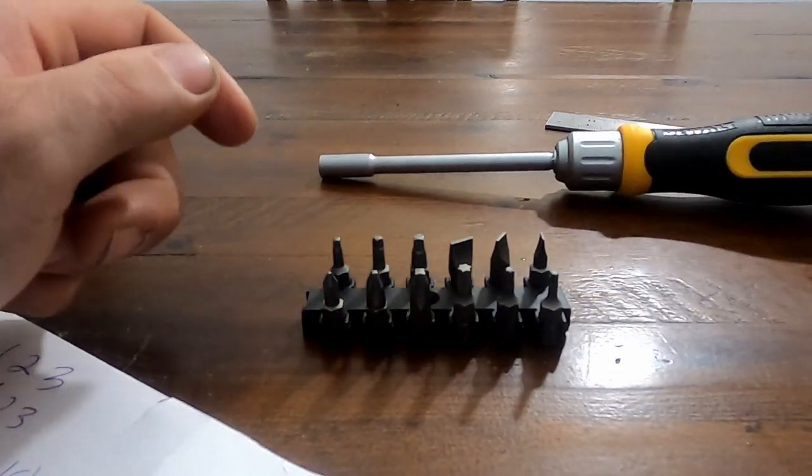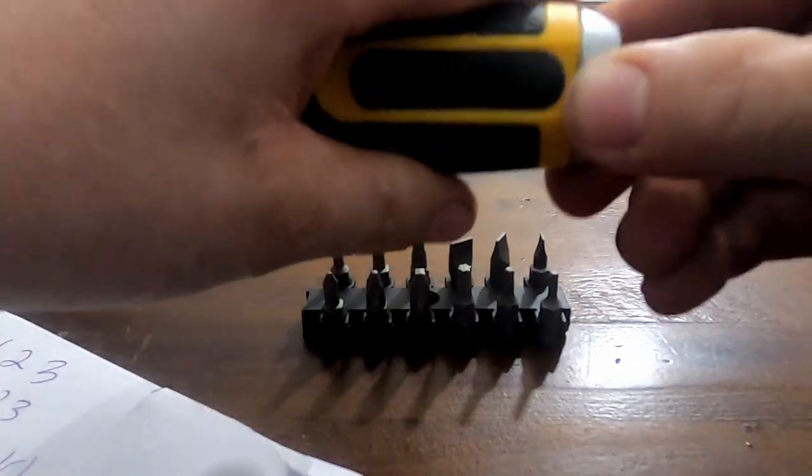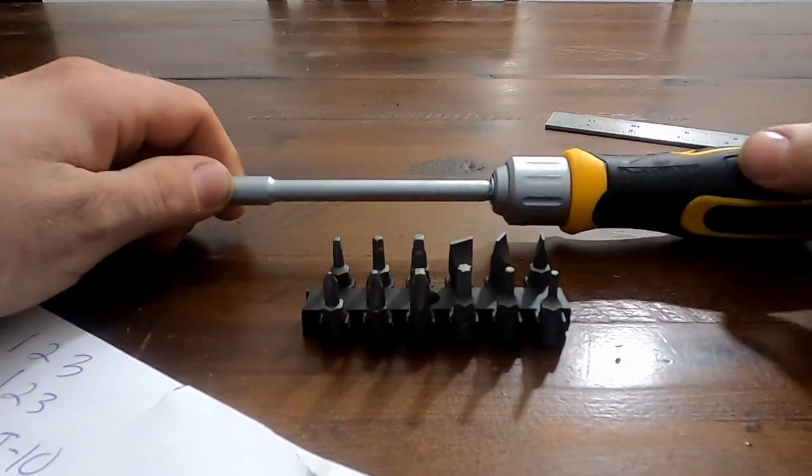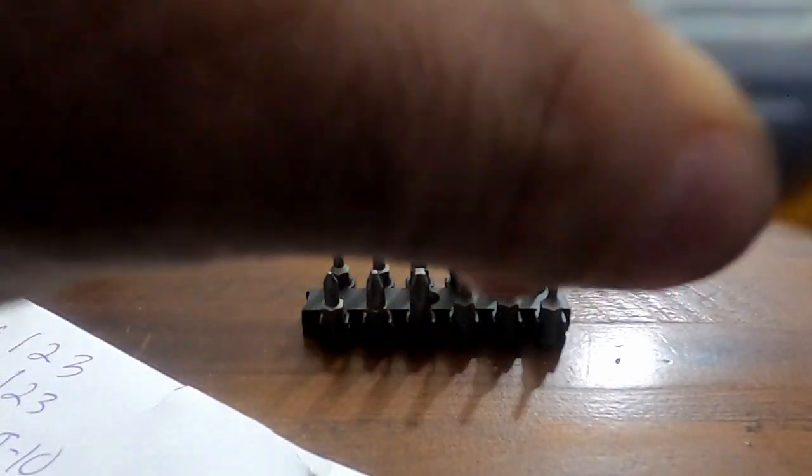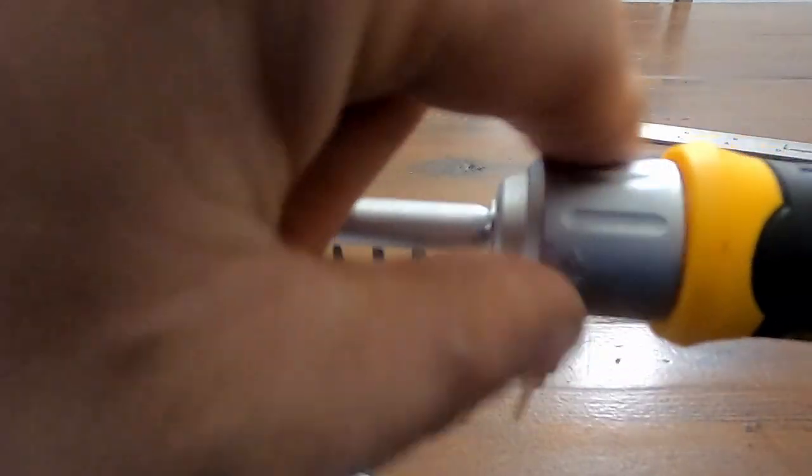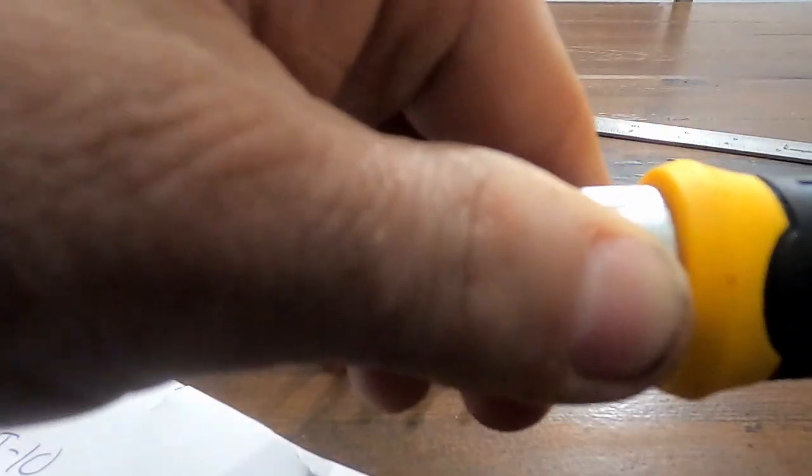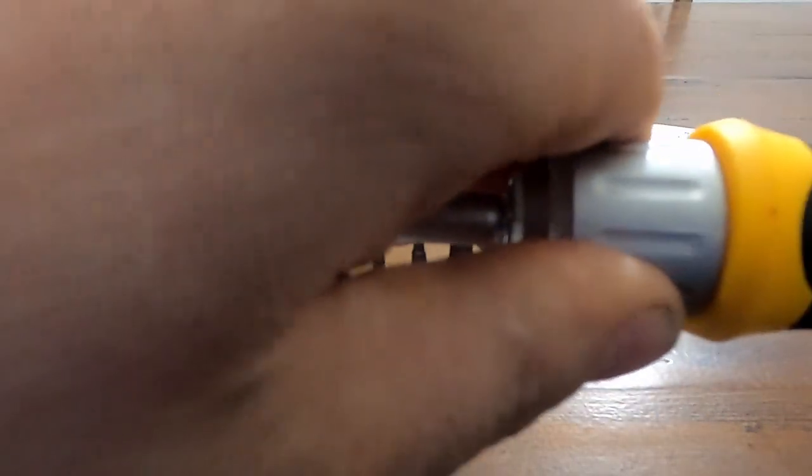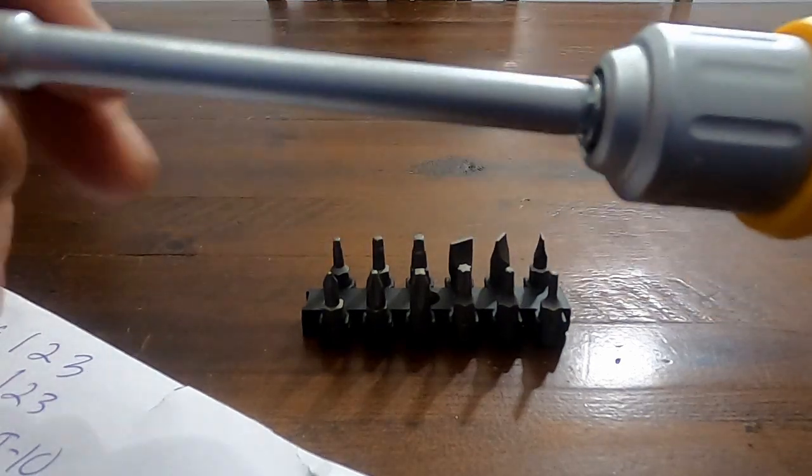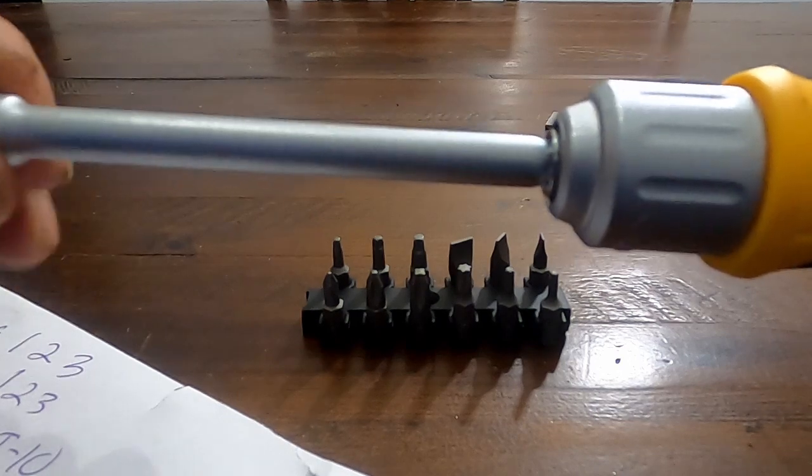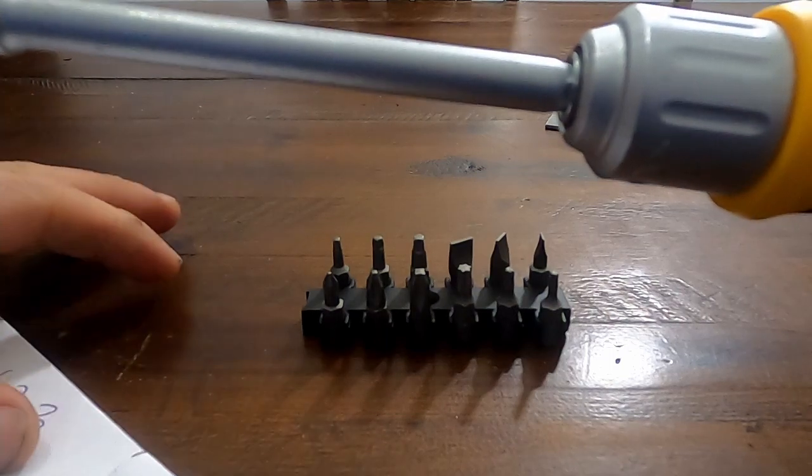And supposedly you can fit those 12 bits inside the handle here, but I didn't have good luck with that. And the ratcheting mechanism, this little metal round piece, if you turn that back and forth, that controls your forward and reverse for the ratcheting mechanism. And I don't know if you can hear that, but that's the ratcheting mechanism.